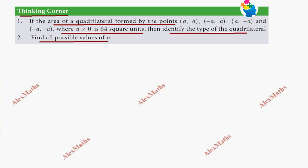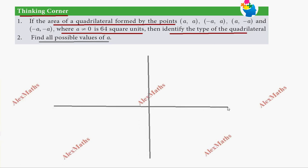Let's start with a rough graph. Plot the x-axis as the horizontal axis and the y-axis as the vertical axis. We'll mark the first point using the coordinates involving 'a'.